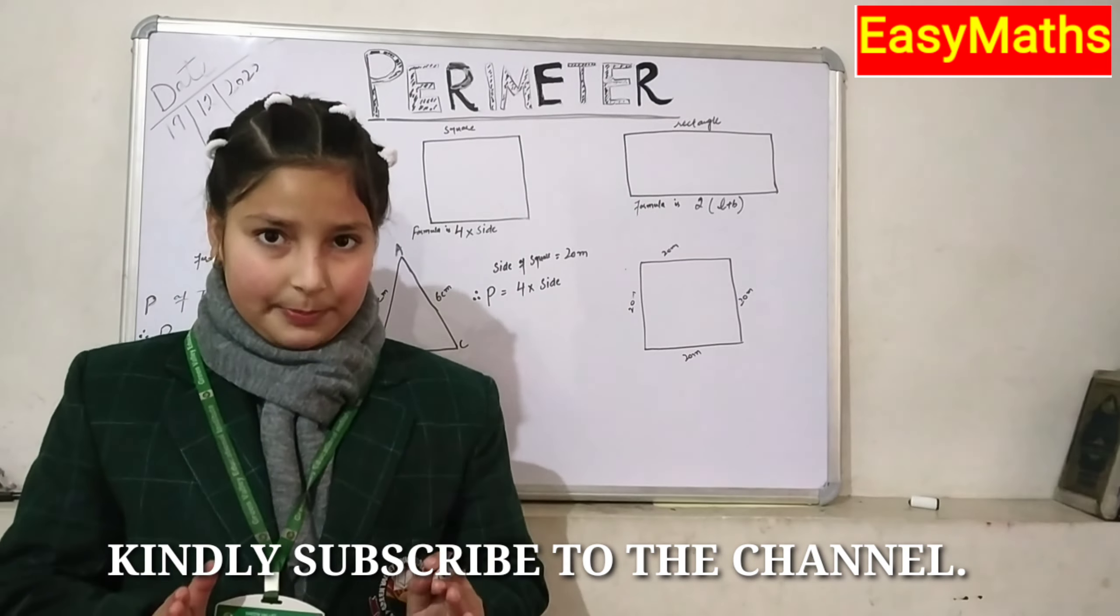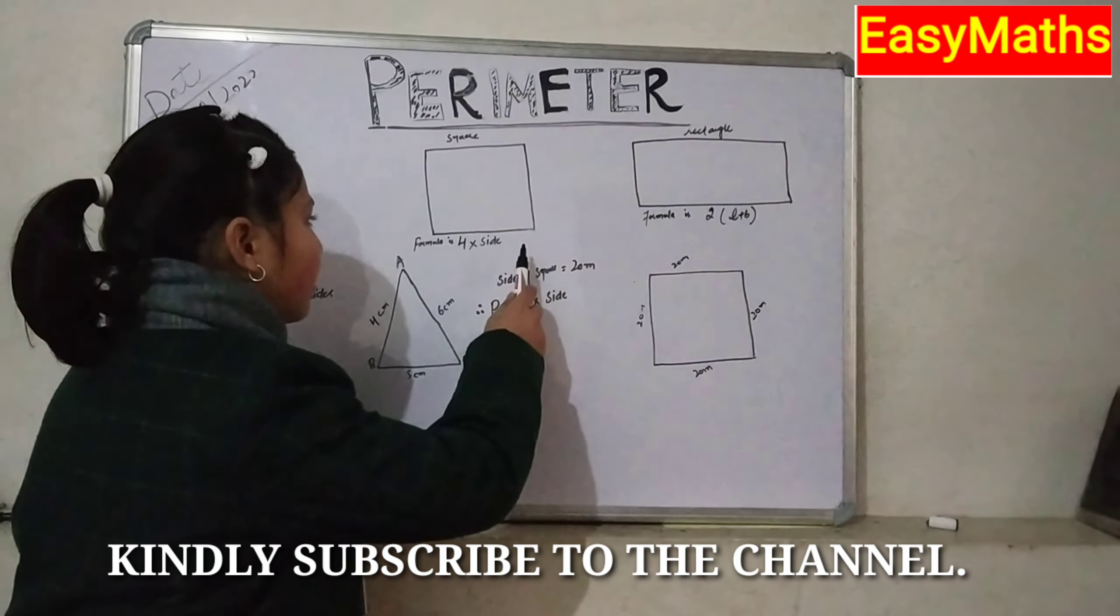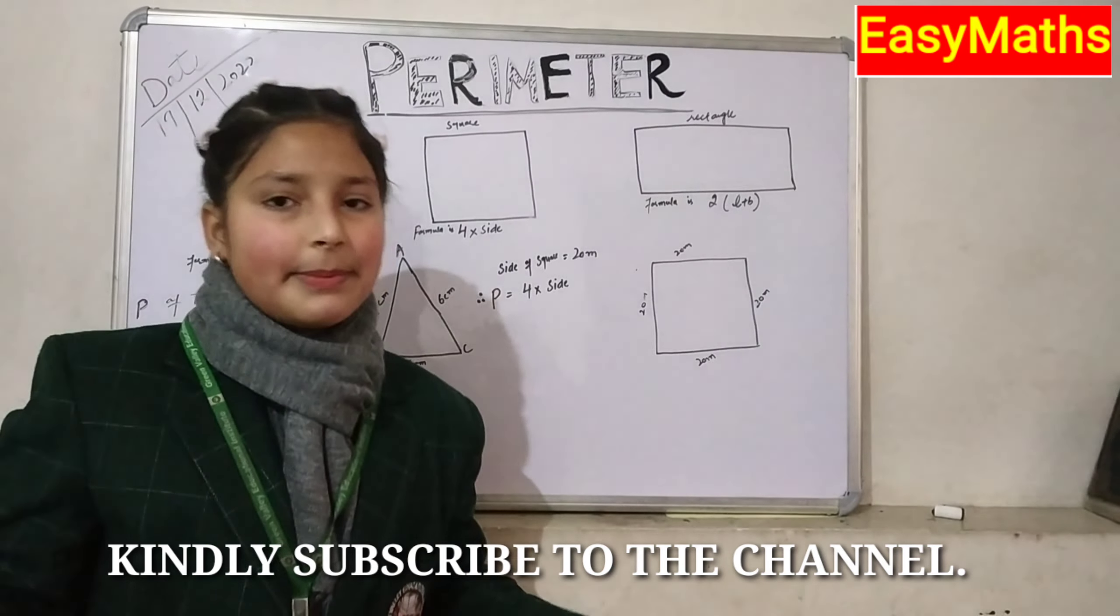Now, what is perimeter? The total length of a boundary of any figure or shape is called its perimeter. We call the shape of the four-fold boundary the perimeter.